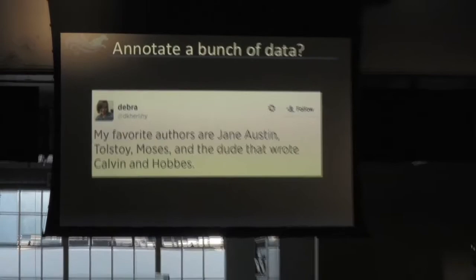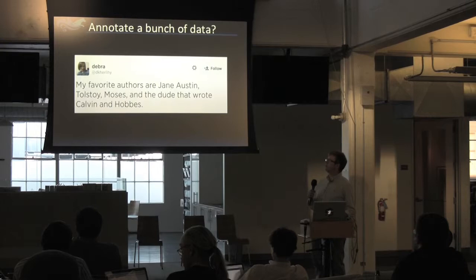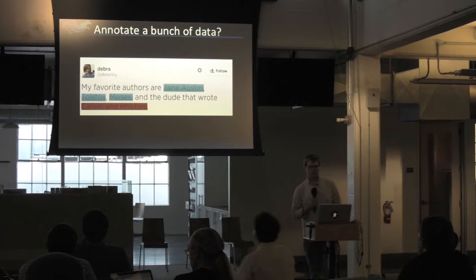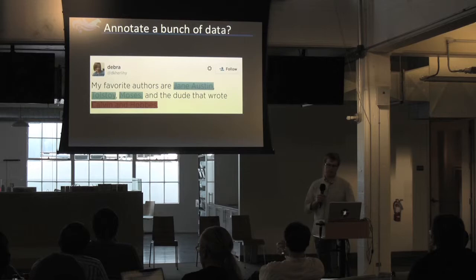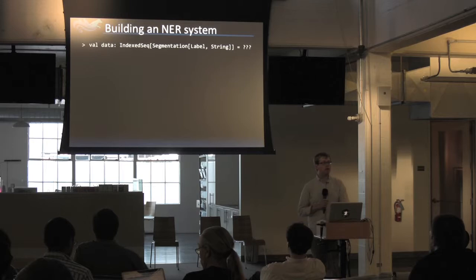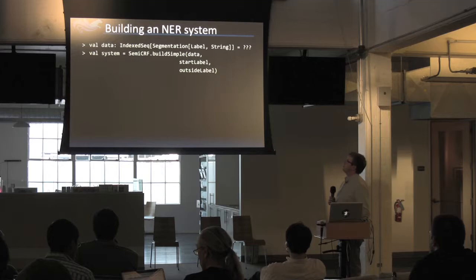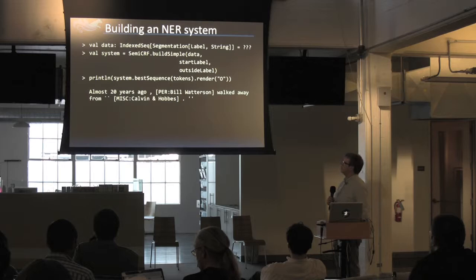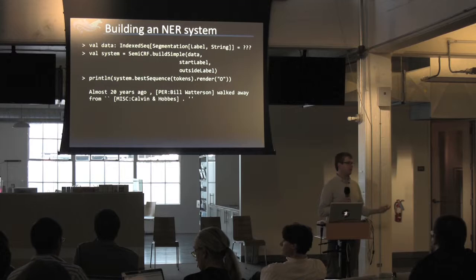One way you can fix it is by getting a bunch of data. You can imagine this was from a tweet, so you might want to get more tweets and annotate the people, places, and things. You would get that Jane Austen, Tolstoy, and Moses are people, and Calvin and Hobbes is a misc. Once you get a bunch of data, you can ask Epic to build a simple semi-CRF, and out comes a new system that gives you the right answer.